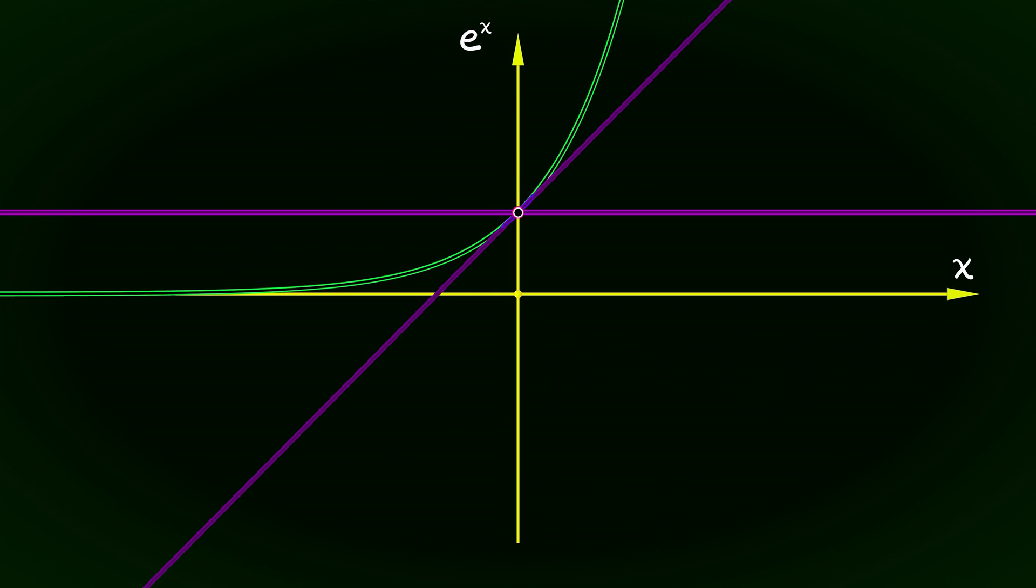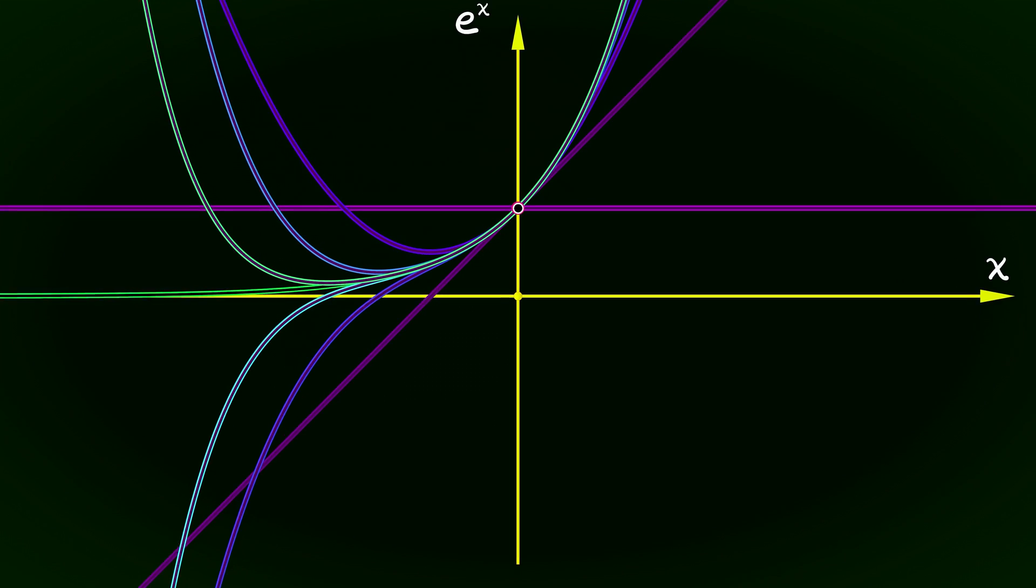So if you think about the graph of the exponential function, and you start graphing terms in the Taylor expansion, look at the graph of 1, then 1 plus x, then 1 plus x plus x squared over 2, then 1 plus x plus x squared over 2 plus x cubed over 6, you keep going with higher and higher degrees, and you get closer and closer to the graph of the exponential function.